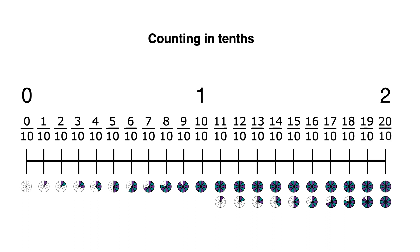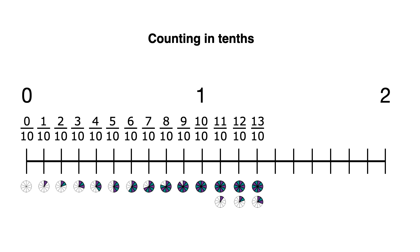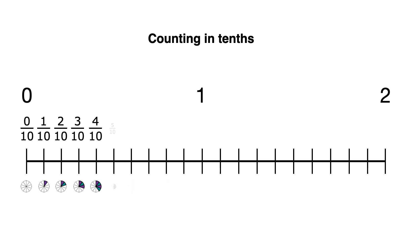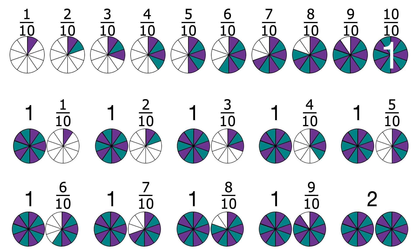And we come backwards, 20 tenths, 19 tenths, 18 tenths, 17 tenths, and keep going. Past 1, and what about decimal tenths?